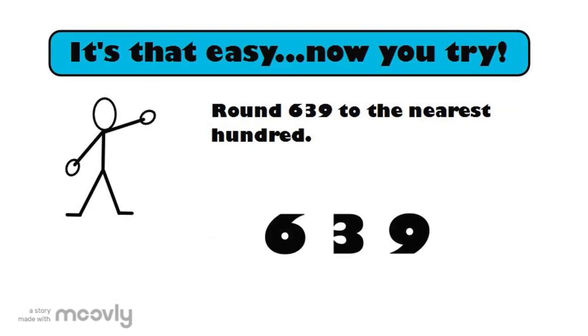So, now you try. We're going to round 639 to the nearest hundred. So, remember our steps. One, which number is in the hundred's place? That's right. It's a six. So, we're going to put a box around the six.